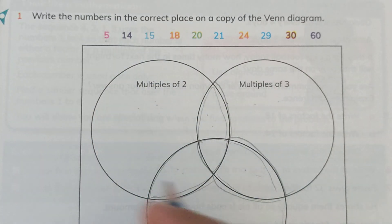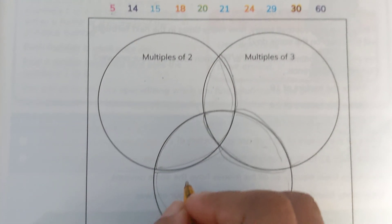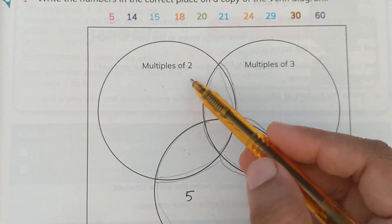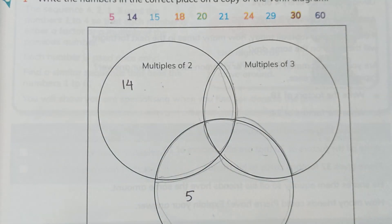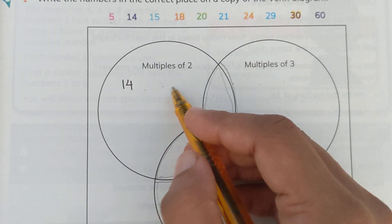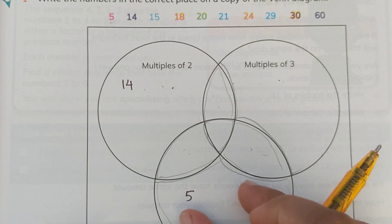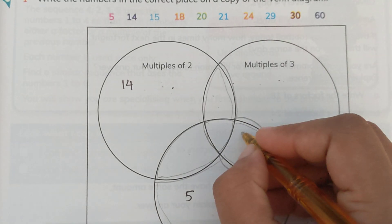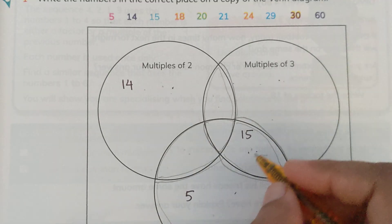If we talk about 5, it is only a multiple of 5, so we write it in the non-overlapping part of the 5-circle. When we talk about 14, it is a multiple of 2 but not of 3 or 5, so we write it in the non-overlapping part of the multiples-of-2 circle. Then 15 — it is not a multiple of 2, but it is a common multiple of 3 and 5, so we write it in the overlapping part between 3 and 5.